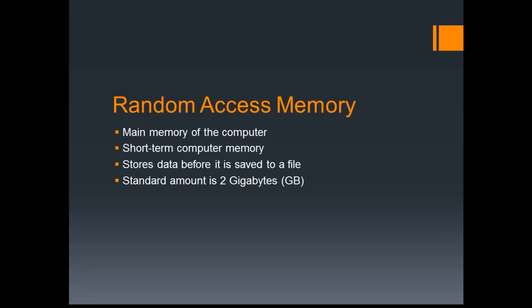RAM stores data before it's saved to a file. So essentially, if you're using Word, whatever you're currently typing into the Microsoft Word program, that data is stored in RAM. When you hit the save button, it stores it to a file, which takes it out of RAM, so you keep it when you turn the computer off. The standard amount of RAM in a computer is 2 gigabytes, abbreviated GB — not Great Britain, gigabytes. Nowadays you'll usually see 4, and sometimes 8 in a production computer for making videos. Some computers go upwards to 32 gigabytes, which is a lot of RAM. More RAM lets you hold bigger files without saving them and can make your computer faster.